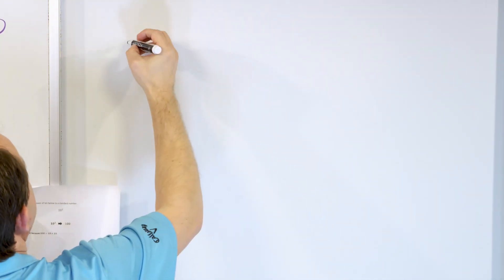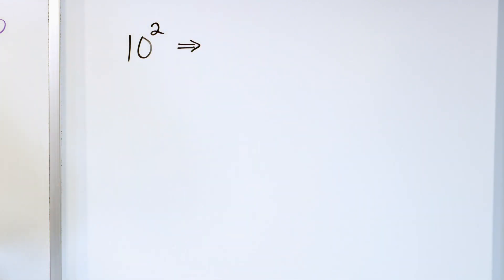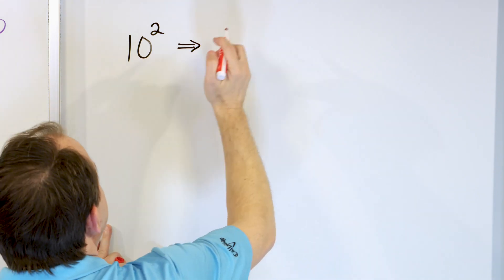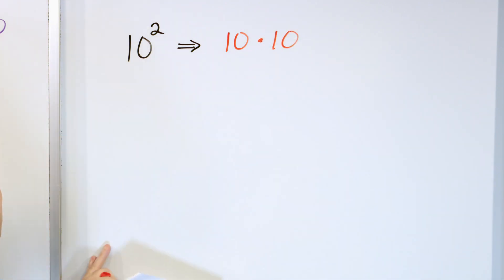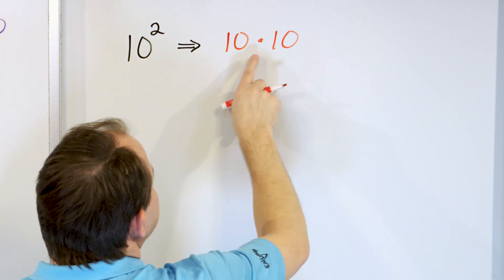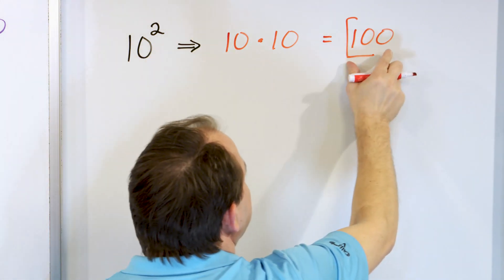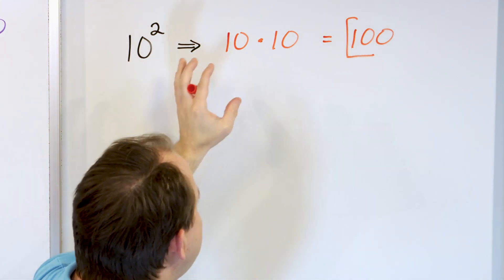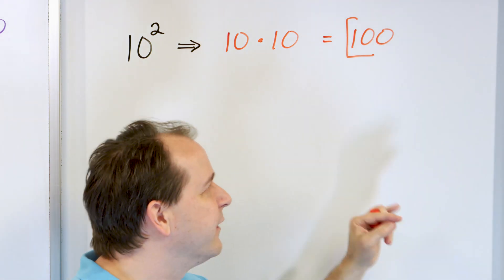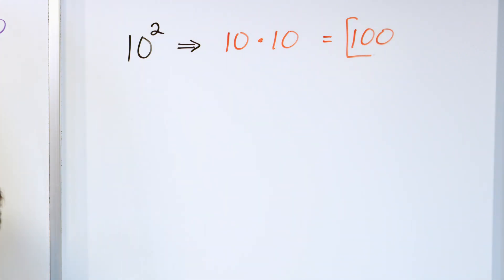Problem four: take 10 to the power of 2 and write it as a standard number. What does 10 to the power of 2 really mean? It means we have 10 multiplied by itself — two 10s — and 10 times 10 is 100. So 10 squared written as a number is 100. You could skip straight to writing a 1 with two zeros at the end.